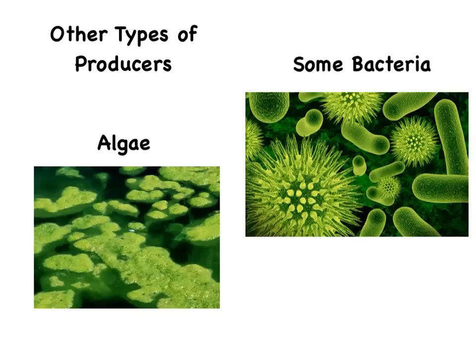Algae and some bacteria are also types of producers. Producers make their food by taking sunlight and using the energy to make sugar. The plant uses the sugar, also called glucose, to make many things such as wood, leaves, roots, and bark.